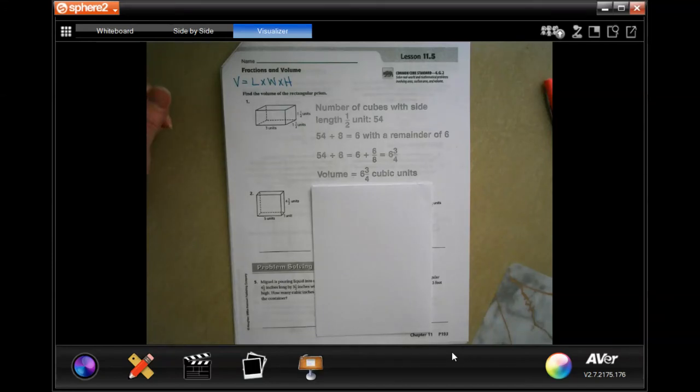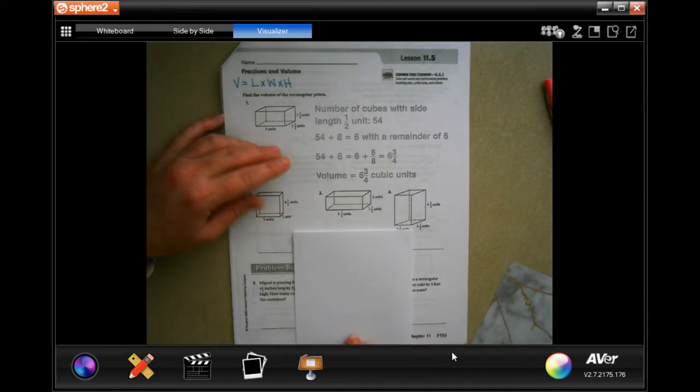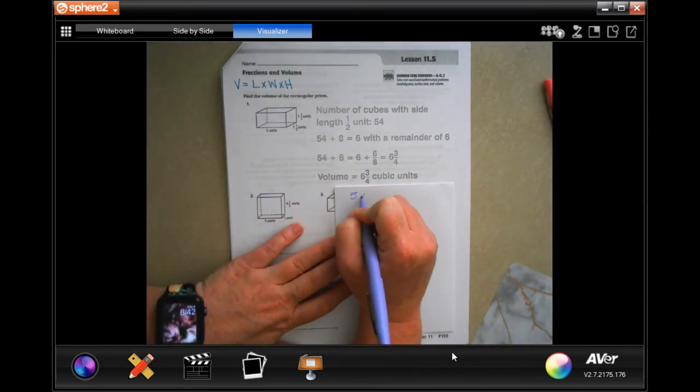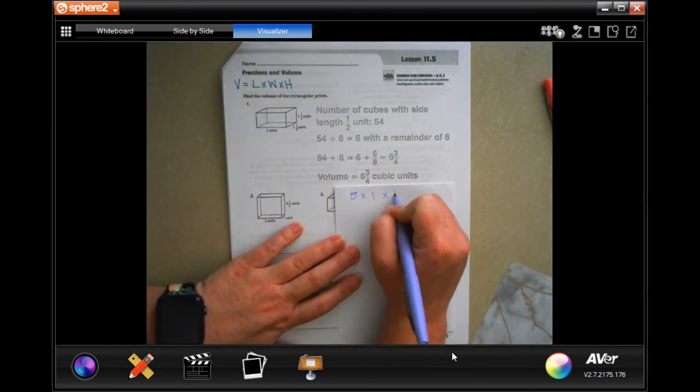Hey y'all, welcome to 6th grade, chapter 11, lesson 5. I've already written the formula to find volume up here at the top. We're going to go ahead and go down to number 2, where it says we're going to have 5 by 1 by 4½.